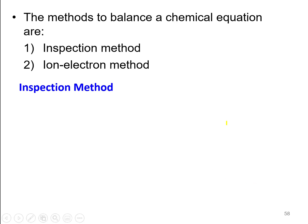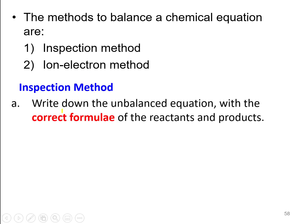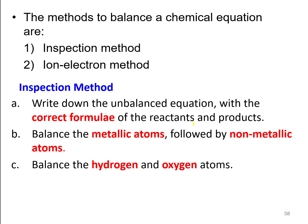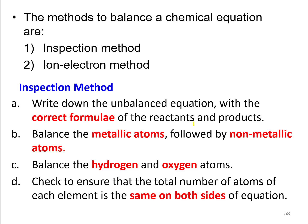There are two methods to balance a chemical equation: the inspection method and the ion-electron method. For the inspection method, first write down the unbalanced equation with the correct formula of the reactants and products. Then balance metallic atoms first, followed by non-metallic atoms. Then balance hydrogen and oxygen atoms. Finally, check to ensure that the total number of atoms of each element is the same on both sides of the equation.